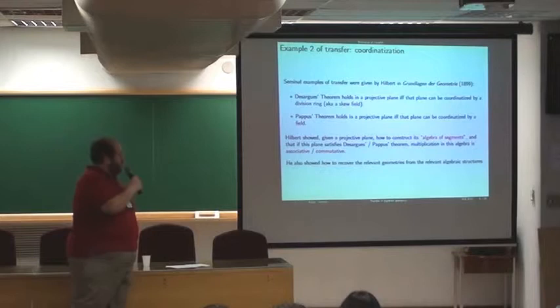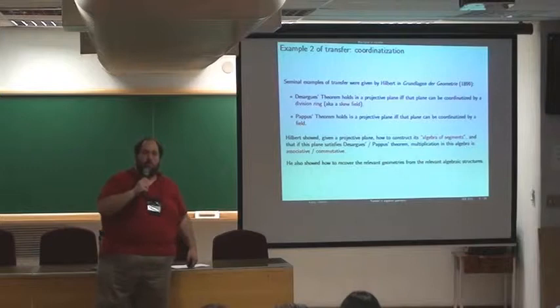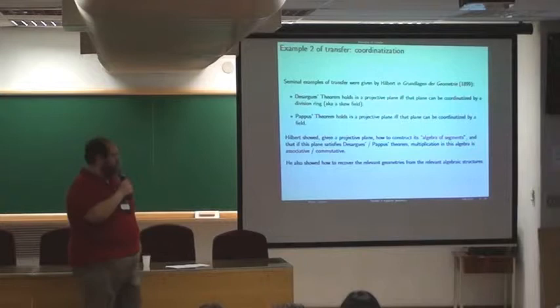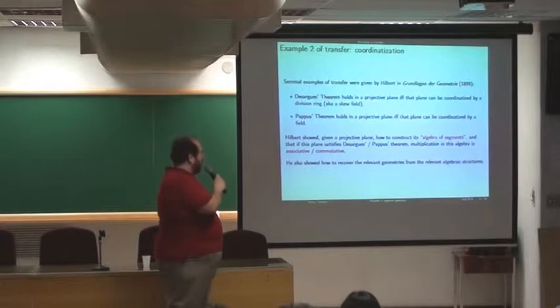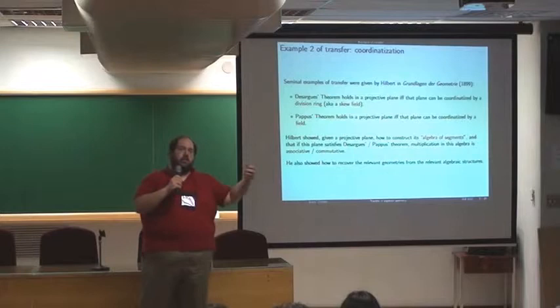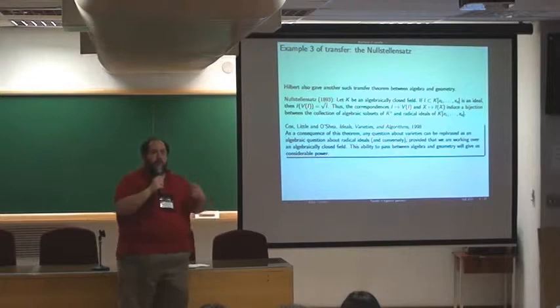And what Hilbert does to show this is he says, given a projective plane, Hilbert shows you how to construct its algebra of segments, and that if this plane has these additional constraints, that is, it satisfies Desargues' and or Pappus' theorem, then the multiplication operation in this algebra of segments will either be associative or even commutative. And that gives you the ring, the division ring or field structure. And then the backwards direction, Hilbert also shows how you can recover the geometries from algebraic structure. So, given a particular division ring, you can recover a Desargesian projective plane. So, these are magnificent examples of transfer.